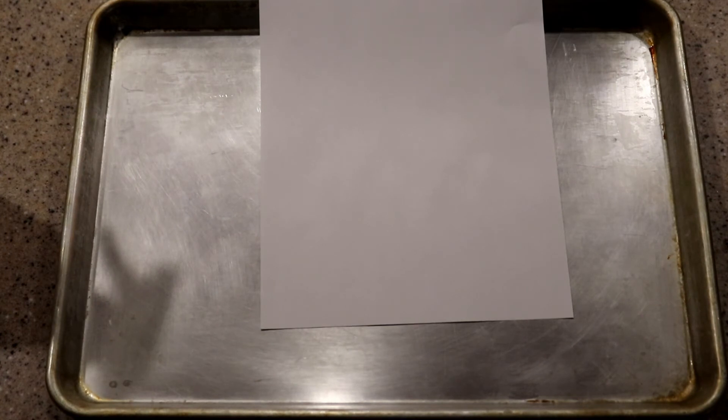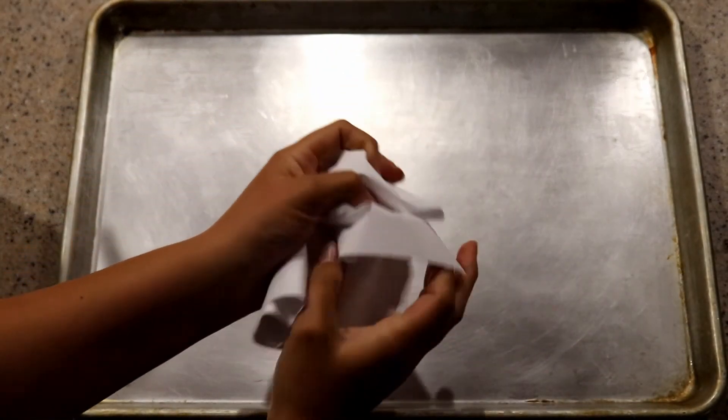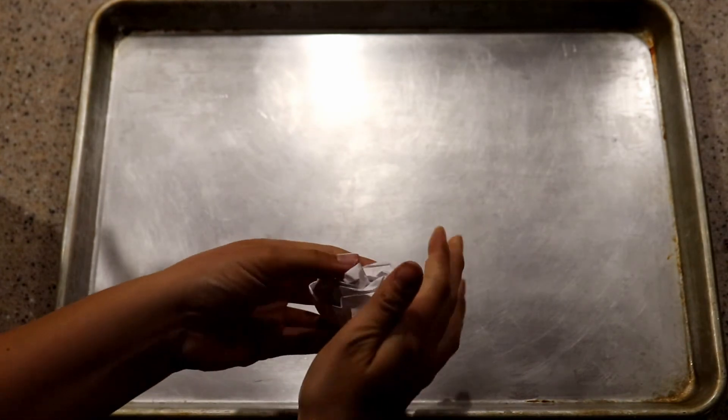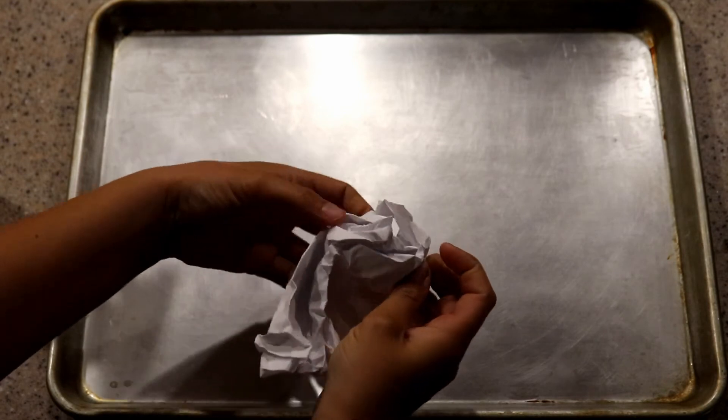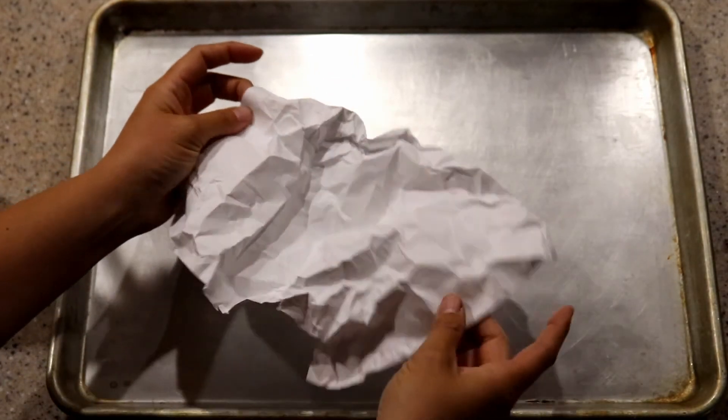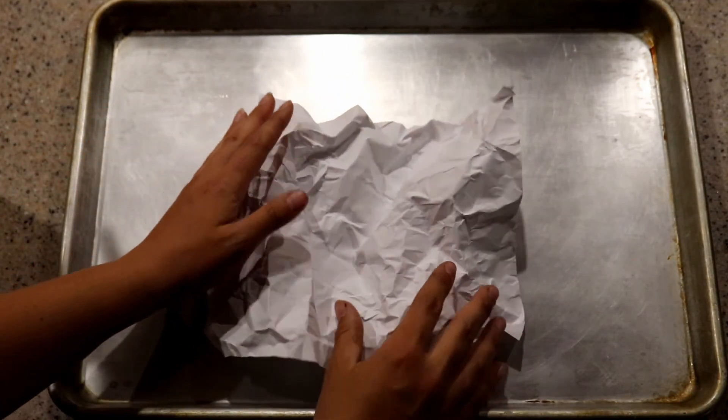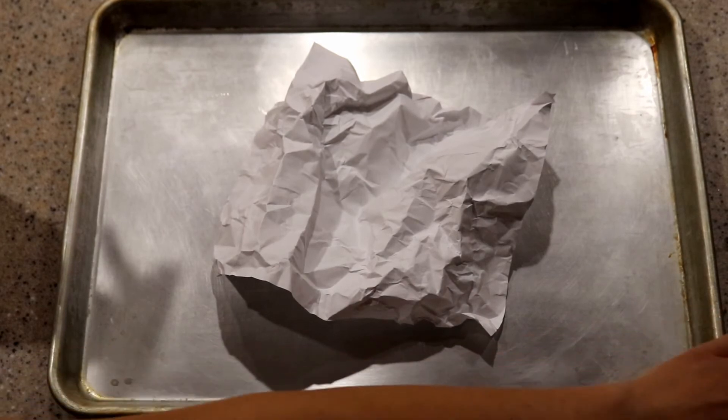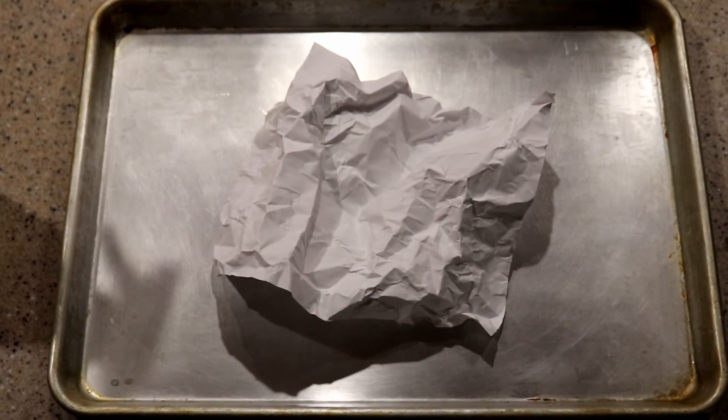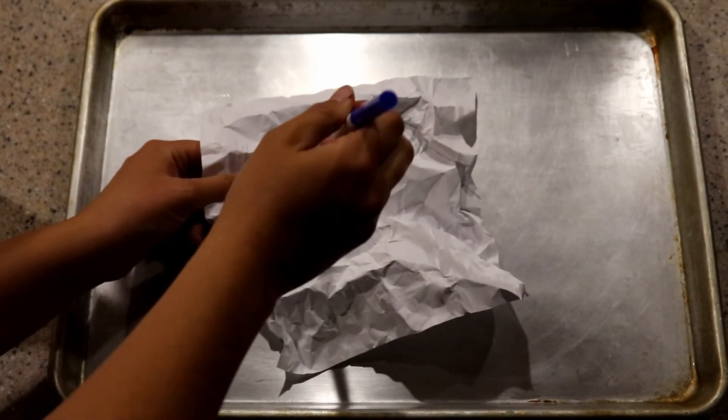Our next one, you're gonna do the same thing. You're gonna take your piece of paper and you're going to crumple it up. And then pull it apart but don't flatten it. And now this time you're going to draw more than just your water. So with your blue marker, you're gonna draw your streams and your rivers again.